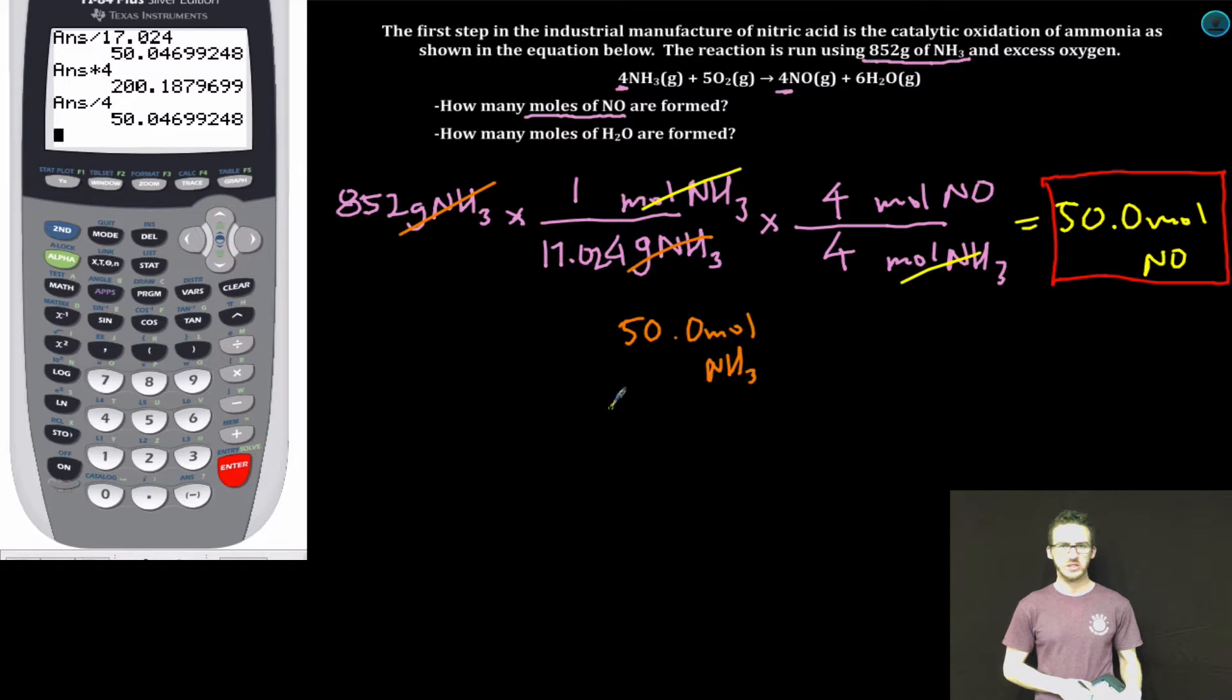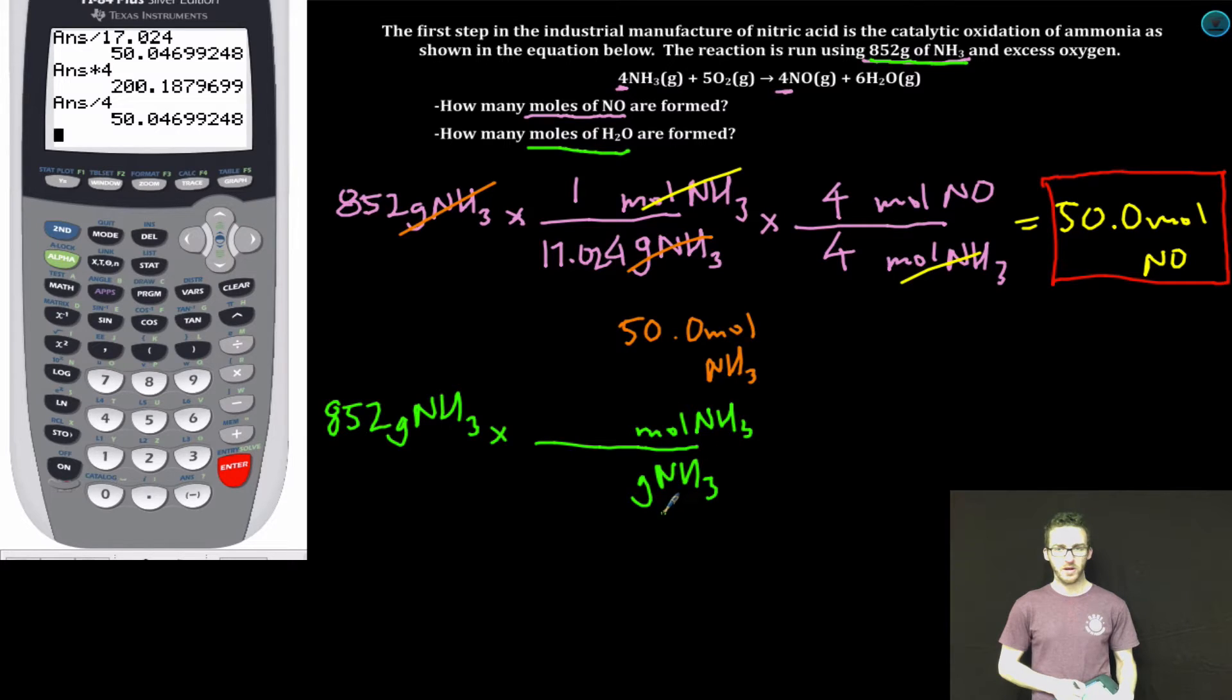Alright, not done yet. This is a two-part question. How many moles of H2O are formed? Again, starting with the amount that we're given in the problem. Setting up my dimensional analysis. Remember, I'm first going to convert to moles of NH3, because when I'm comparing two things in my balanced chemical equation, it's a mole-to-mole relationship, not a gram-to-mole relationship. I've already determined the mass in grams in one mole from the earlier step.